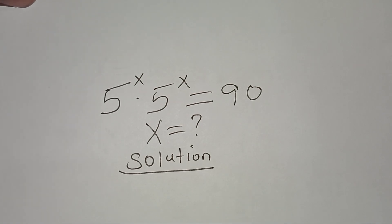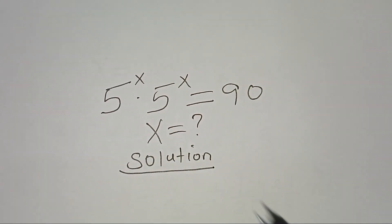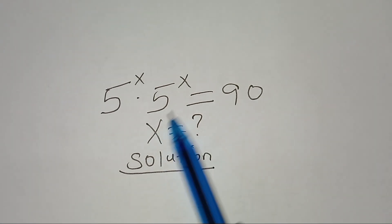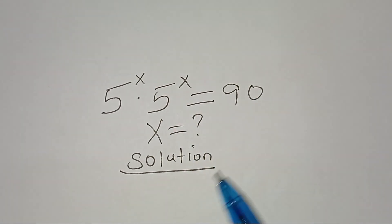You are welcome to solve the following exponential equation: 5 to the power x times 5 to the power x, this is equal to 90. So what are the values of x?